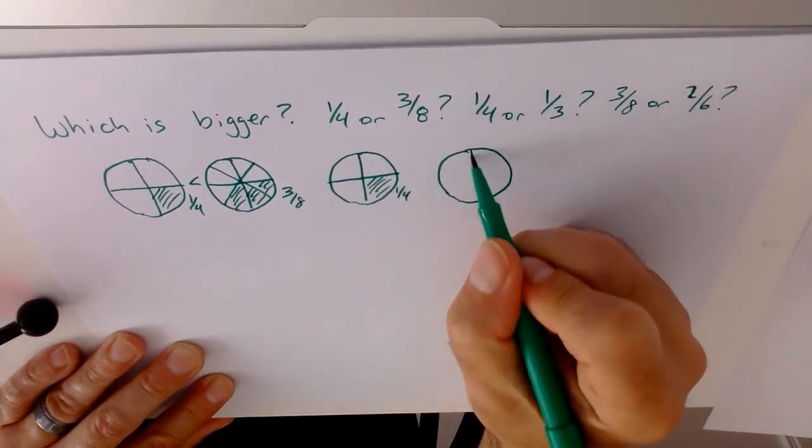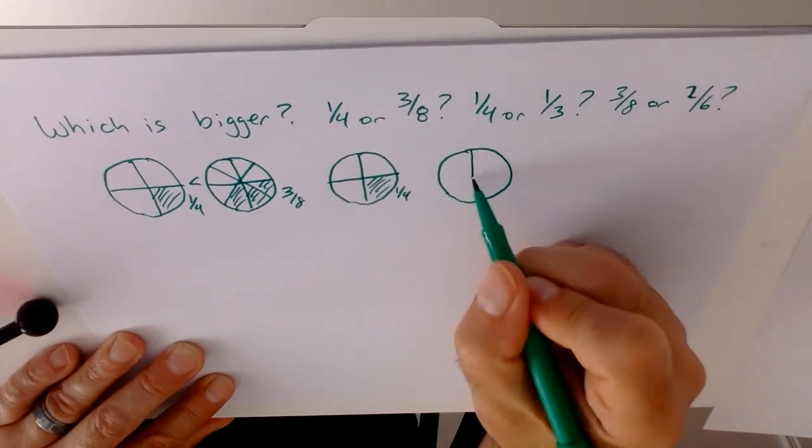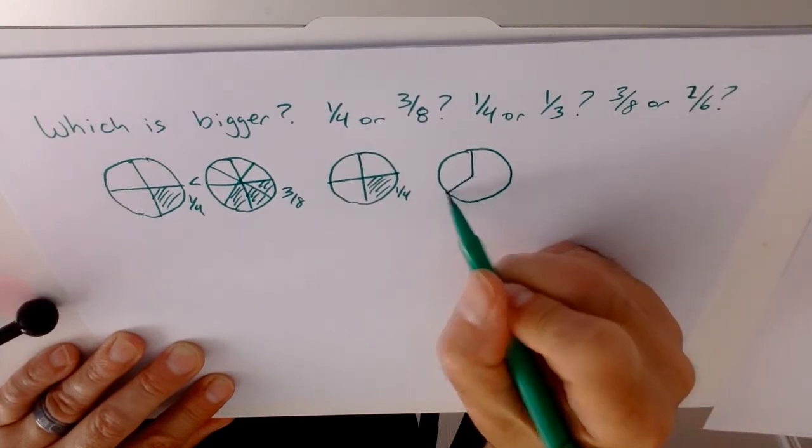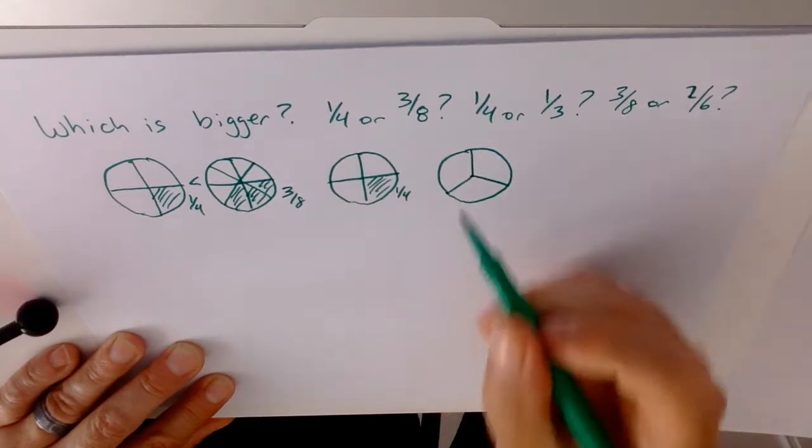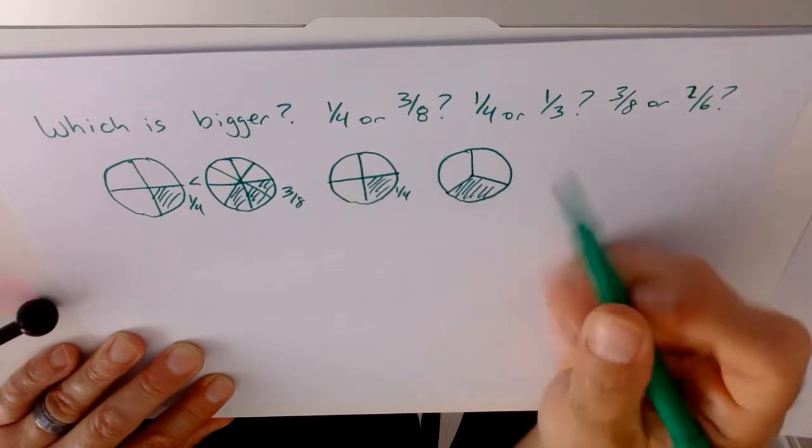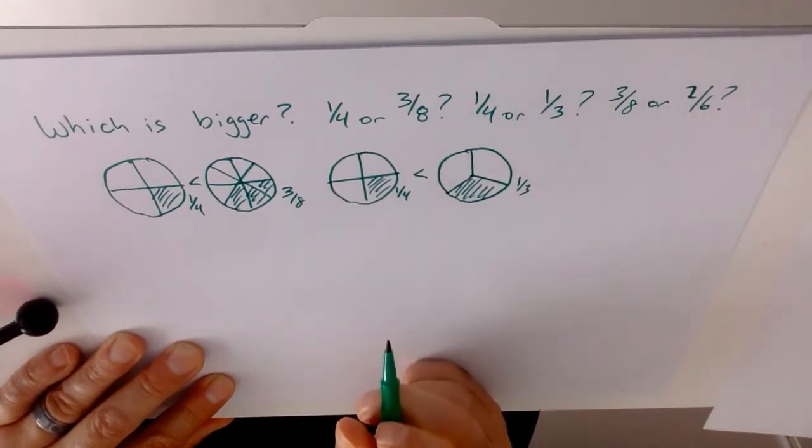The way to do that is to make an upside down Y, or a peace sign, where you take a line, go to the middle, and go like that, and like that. And now you can easily see that 1 third is bigger than 1 quarter.